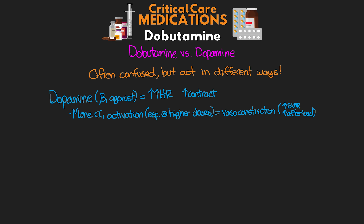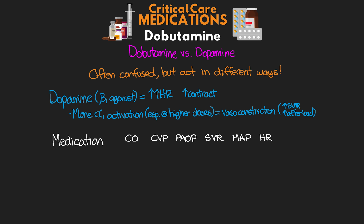I'm going to put up a quick chart here to compare the effects of these two medications. We're going to look at cardiac output, CVP, pulmonary artery occlusive pressure, SVR, MAP, and heart rate. For dobutamine, we see a strong increase in cardiac output. We actually see decreases in CVP, PAOP, as well as SVR or afterload. For MAP, we're going to see increases, primarily driven by the increased cardiac output. As far as heart rate, it's either going to be about the same or we might see an increase.